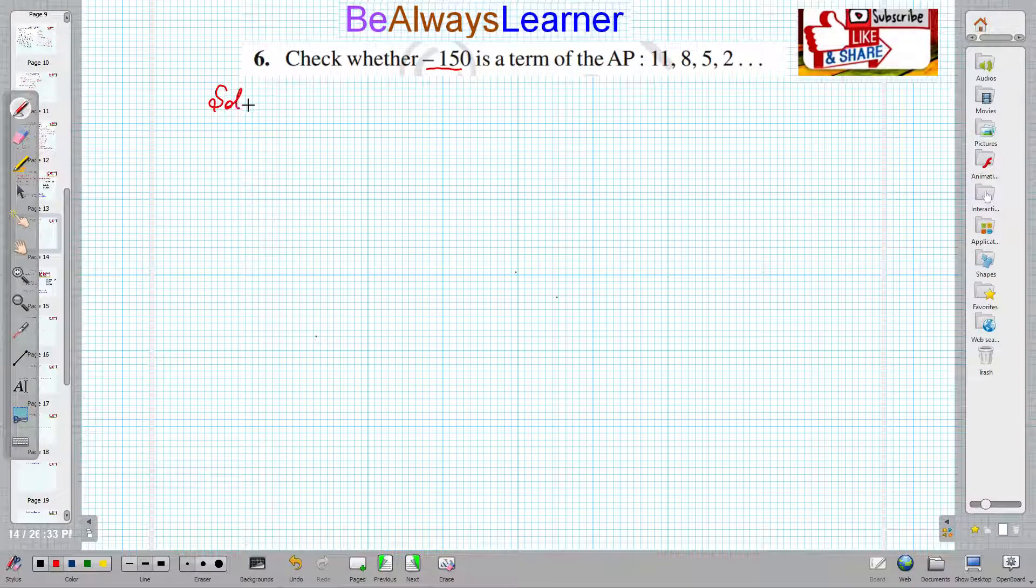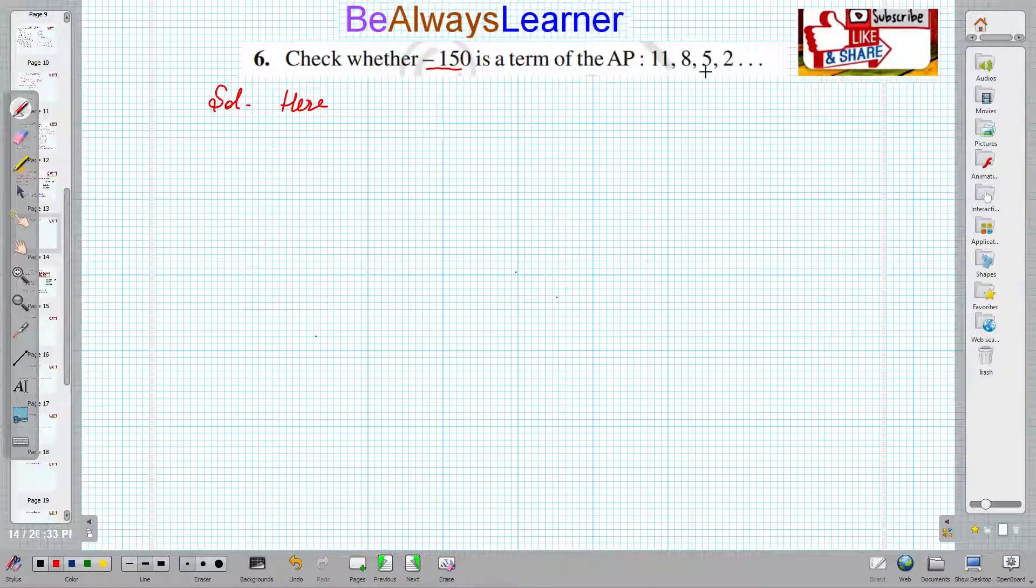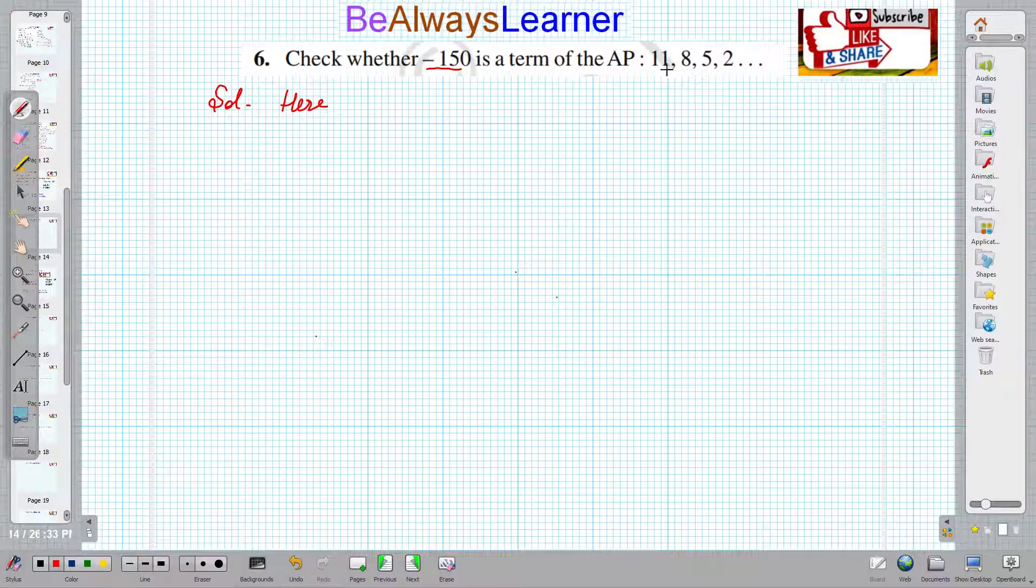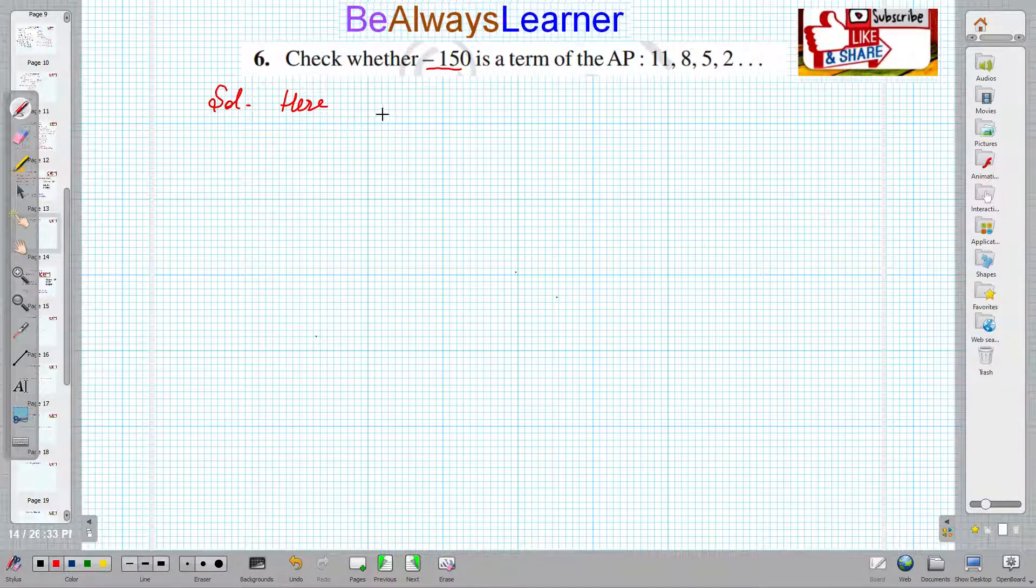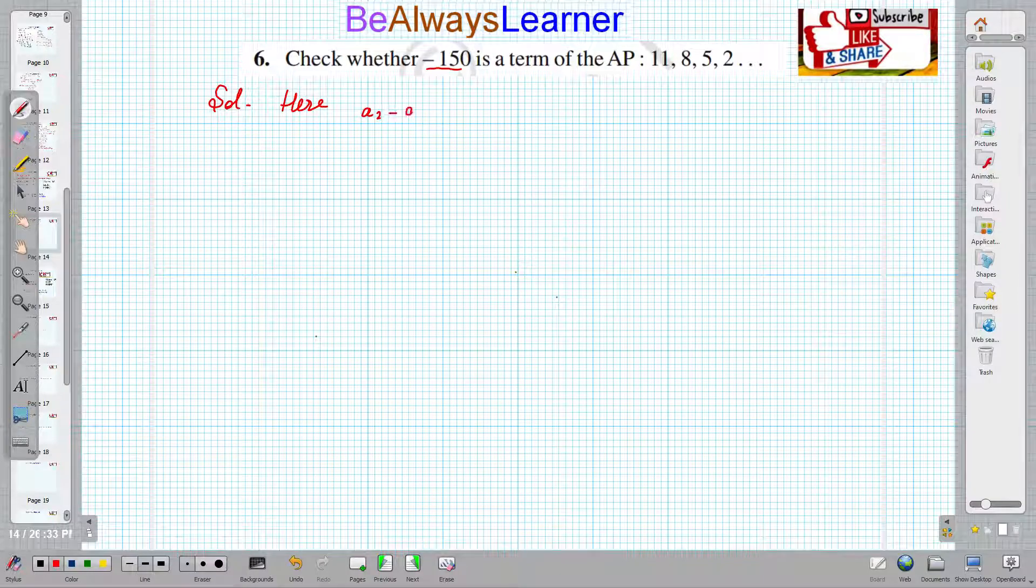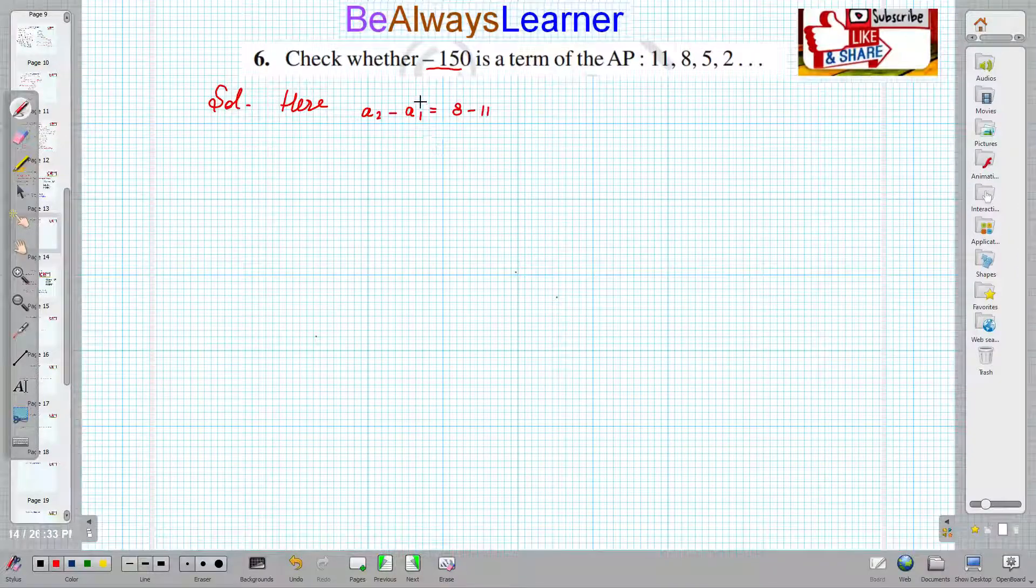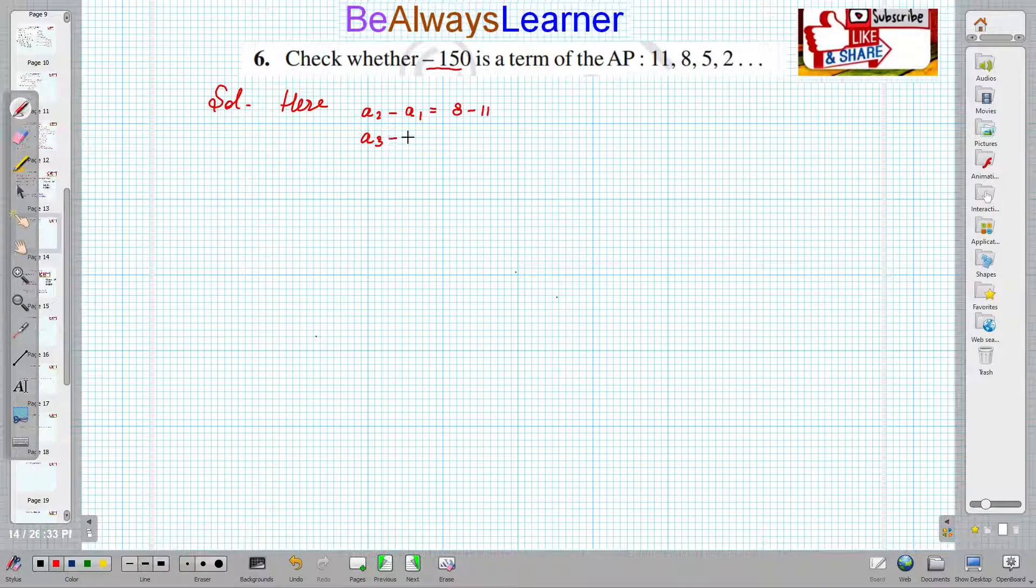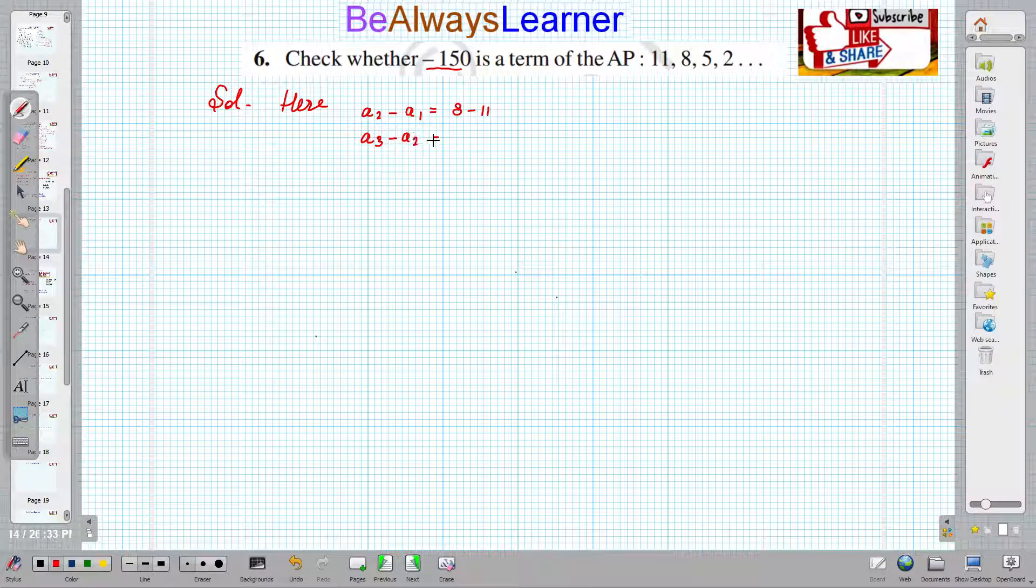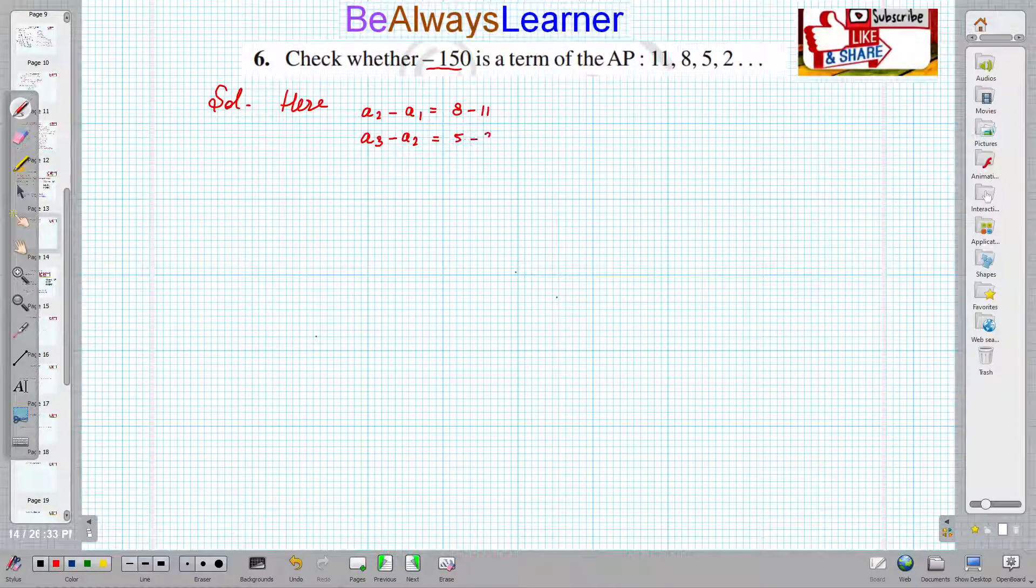So, solution. Here, first of all, we need to find D. What is the value of D here? We need to do A2 minus A1 - second term minus first term. So we have to do 8 minus 11. And then third term minus previous term, so 5 minus 8.